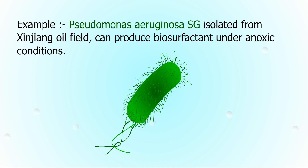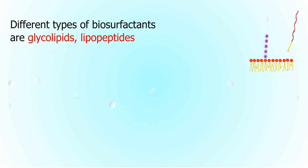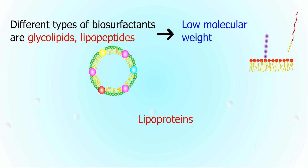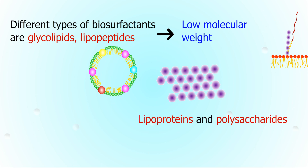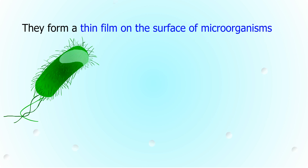Pseudomonas aeruginosa SG, isolated from Xinjiang oil field, can produce biosurfactant under anoxic conditions. Different types of biosurfactants include glycolipids and lipopeptides, which are low molecular weight biosurfactants, and lipoproteins and polysaccharides, which are high molecular weight biosurfactants.